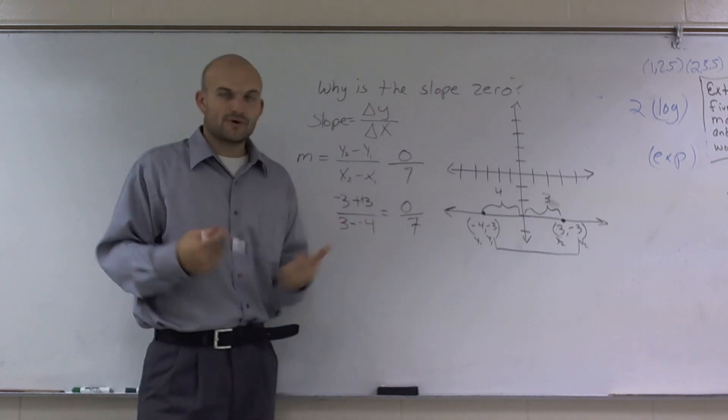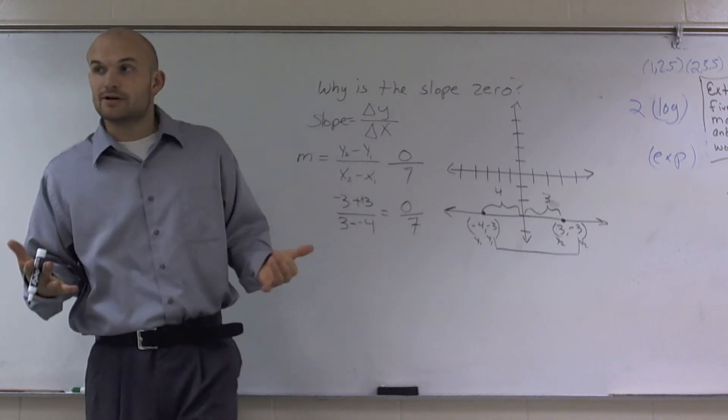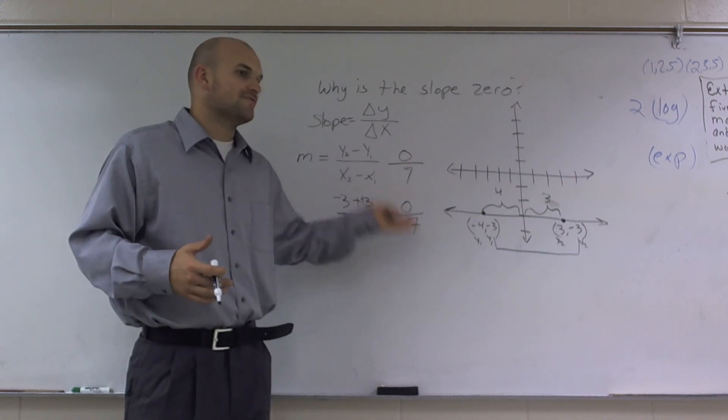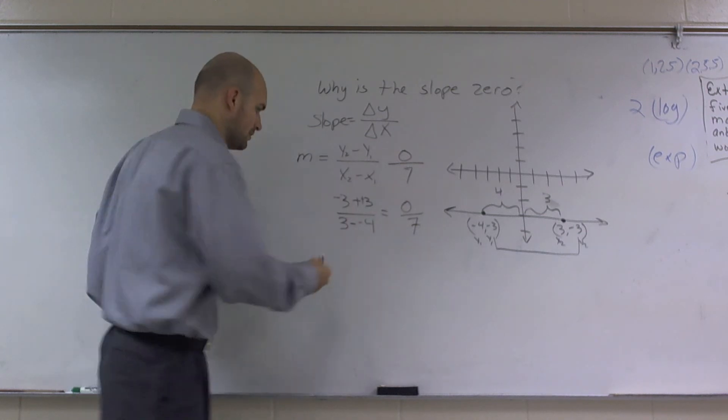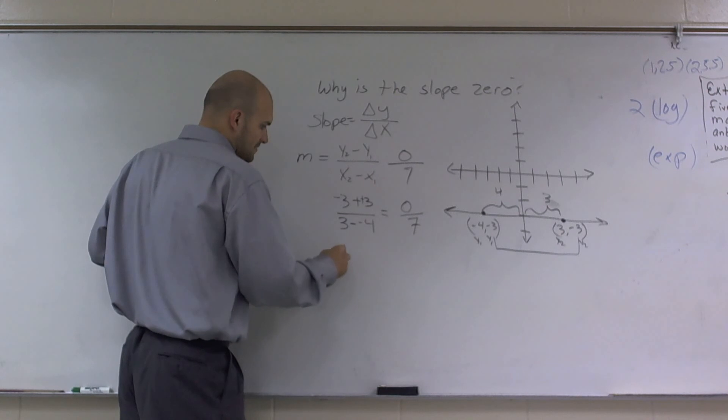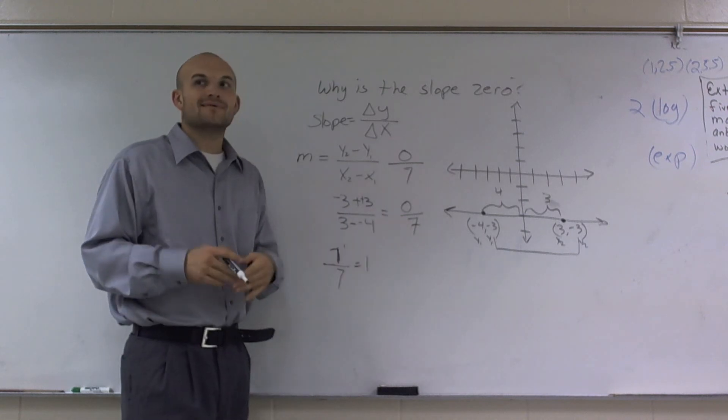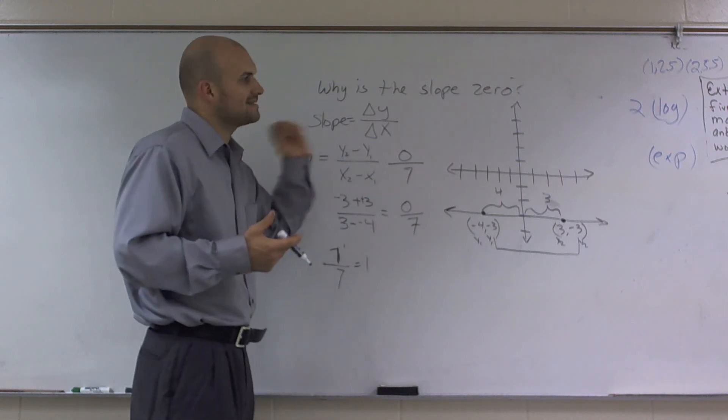Now, 0 divided by 7 is always going to equal 0 because how many times does 7 divide into 0, right? Well, we know that 7 goes into 7 one time, but 7 does not go into 0 any time. So therefore, the answer is 0.